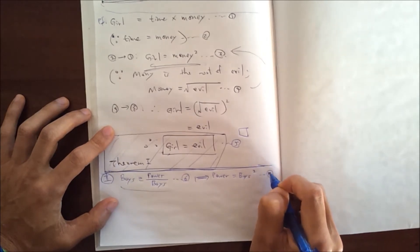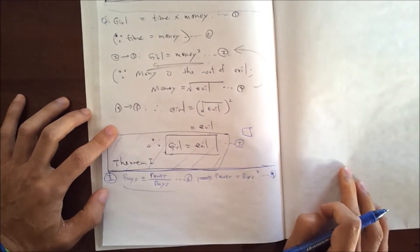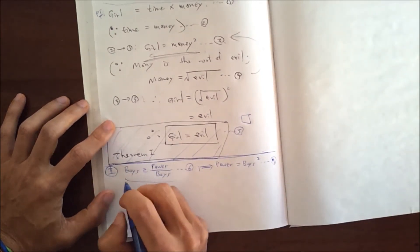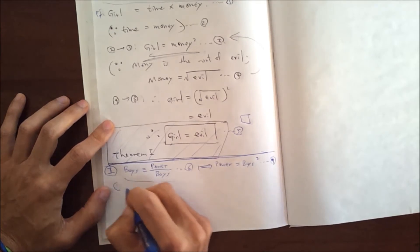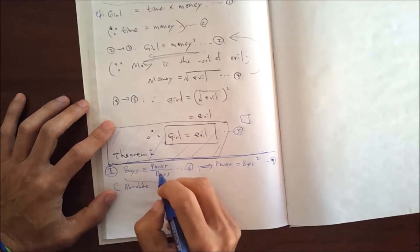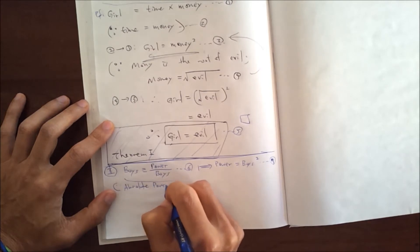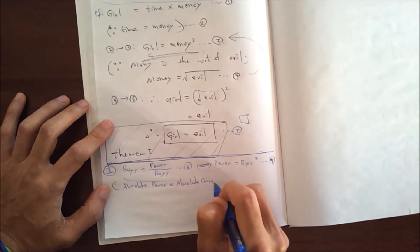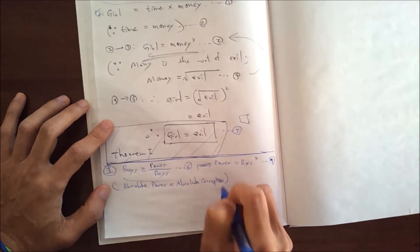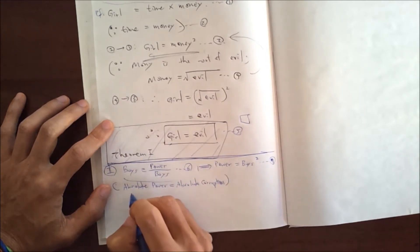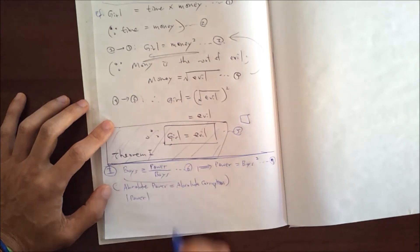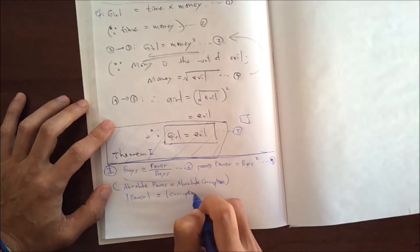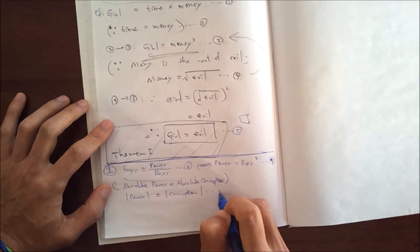Let's call that equation 7. Another thing we can think about is something you've heard before: absolute power equals absolute corruption. So mathematically, the absolute value of power equals the absolute value of corruption. Let's call it equation 8.